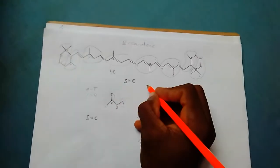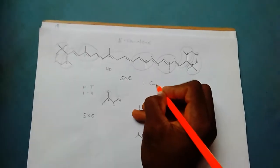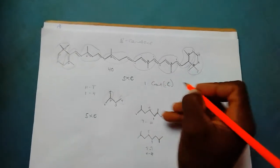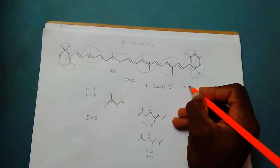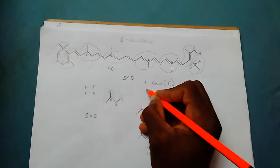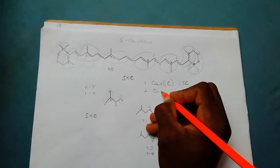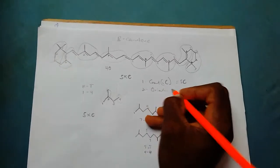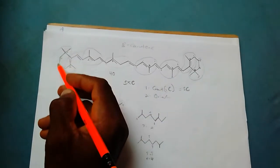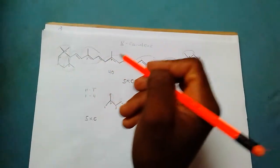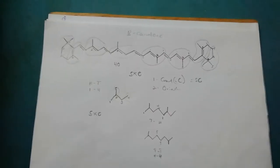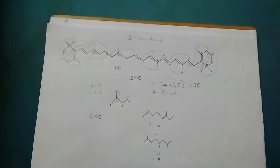So first you count the number of carbons in the compound. Then look at the orientation — if it is head-to-tail. Or if you can identify the individual isoprene units in their correct orientation, then it makes that compound a terpene. First count the number of carbons; if it is 5 or a multiple of 5, then it is likely to be a terpene. Then look at the orientation of the isoprene units, and if you can identify the individual isoprene units in the compound in their correct orientation, then it makes that compound a terpene.